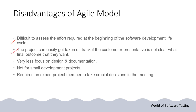The second disadvantage is that the project can easily get taken off track if the customer representative is not clear about the final outcome they want. If the customer is unclear about the requirement or final outcome, the project can go off track. The third disadvantage is that there is very little focus on design and documentation, as documentation is given secondary priority in the agile model.